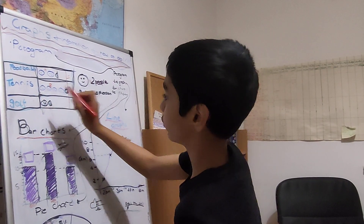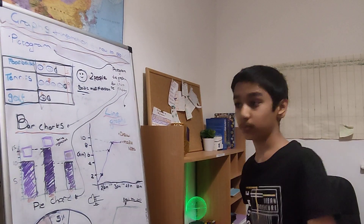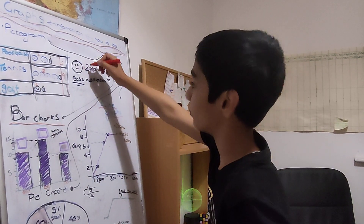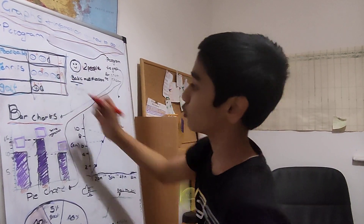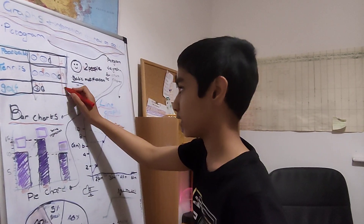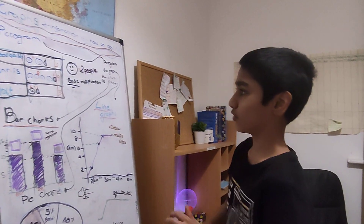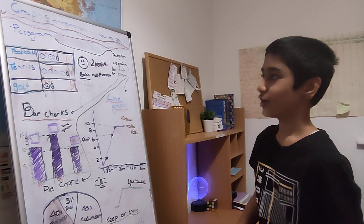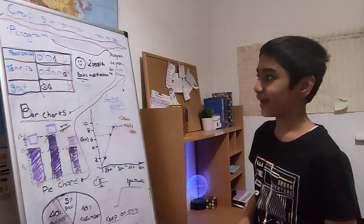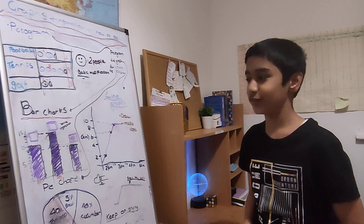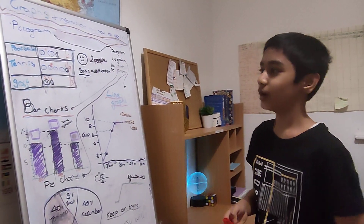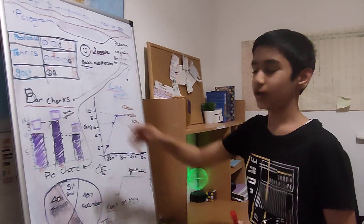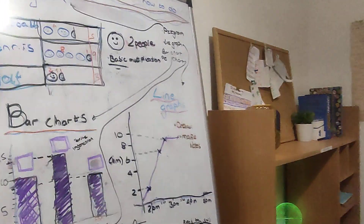Next up is golf. One smiley face: one times two is two people. Then half a smiley face is one person. Two plus one is three — so three people like golf. Now that we've written down all the data, if asked what's the most popular sport, the answer is tennis, and the least popular is golf. It's really helpful to write down all the data.